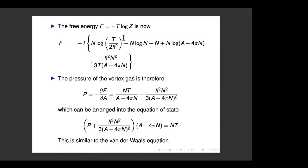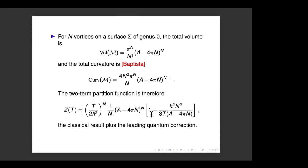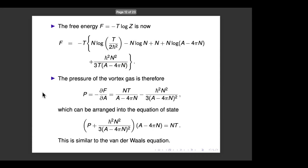The free energy F = −T log Z now has the same classical term as before, plus an extra term from the curvature correction. Assuming the correction is small relative to the volume term, the log of one plus the correction gives the leading correction. Differentiating the free energy with respect to A, the pressure becomes the classical Clausius term plus a correction that goes as N²/(A−4πN)². Notably, the temperature cancels in this extra term.